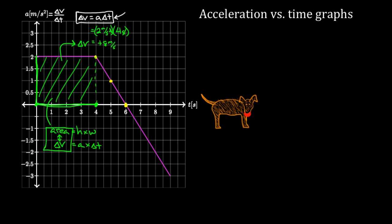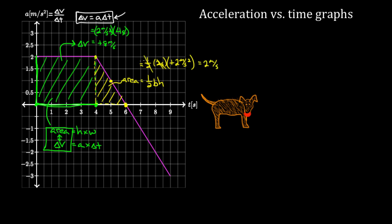That's really useful, because over in the diagonal region, the area is still the change in velocity. And I know how to find the area of a triangle: one half base times height. So the area there is one half times base of two seconds times height of positive two meters per second squared, and the half cancels with one of the twos, giving us two meters per second. That's the change in velocity during that time — Daisy's velocity changed by two meters per second.